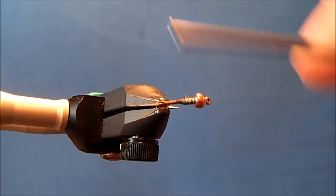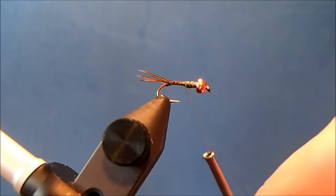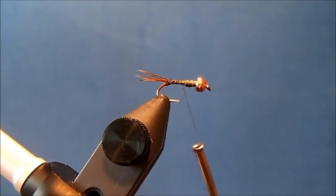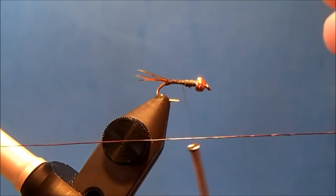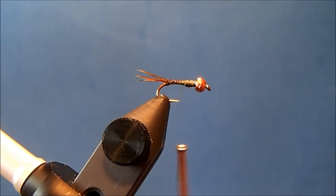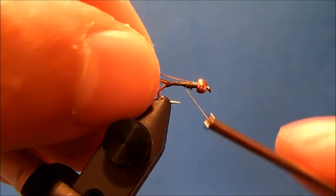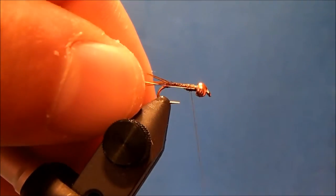This pattern has a rib. I'm going to use a very fine copper wire for mine, so I'll remove maybe a three inch section and tie that into the side.